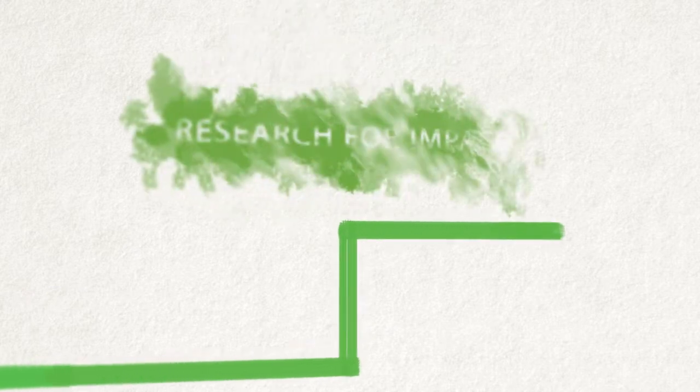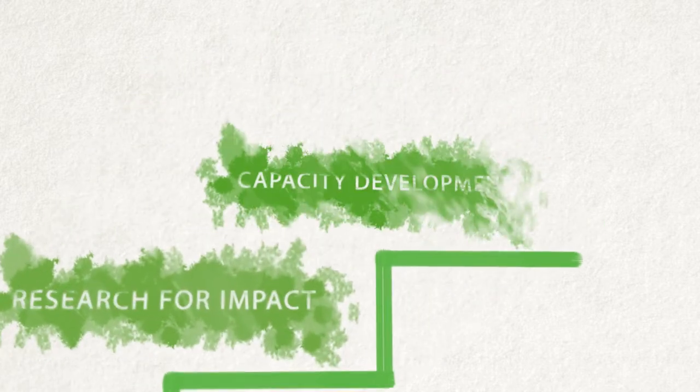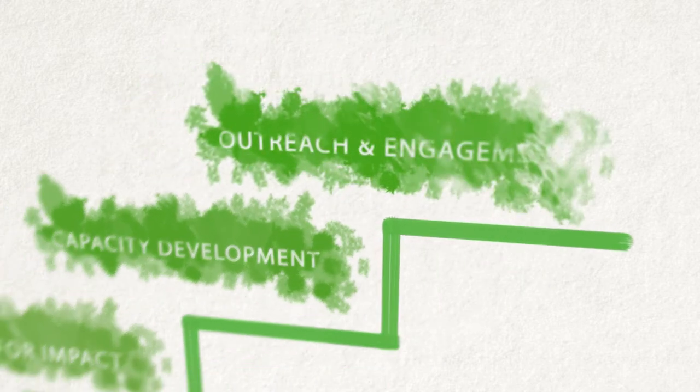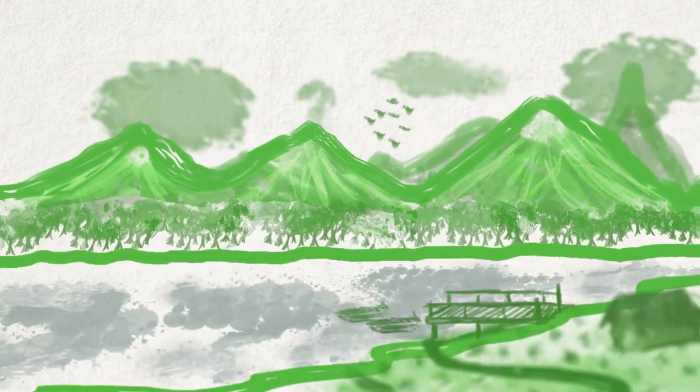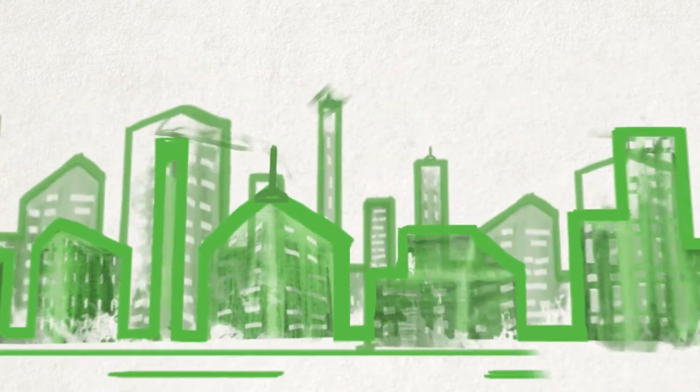With our three pillars of research for impact, capacity development, and outreach and engagement, we're doing it from a landscape approach—looking for balanced ways to benefit people and the environment. Our scientists are taking on the big issues.